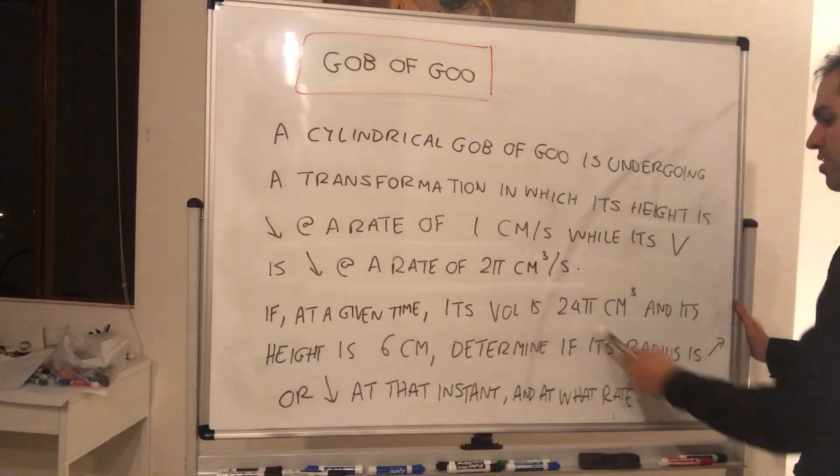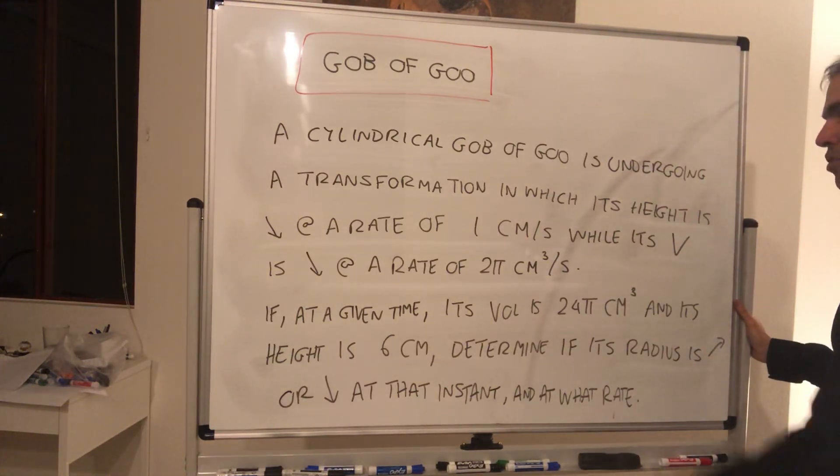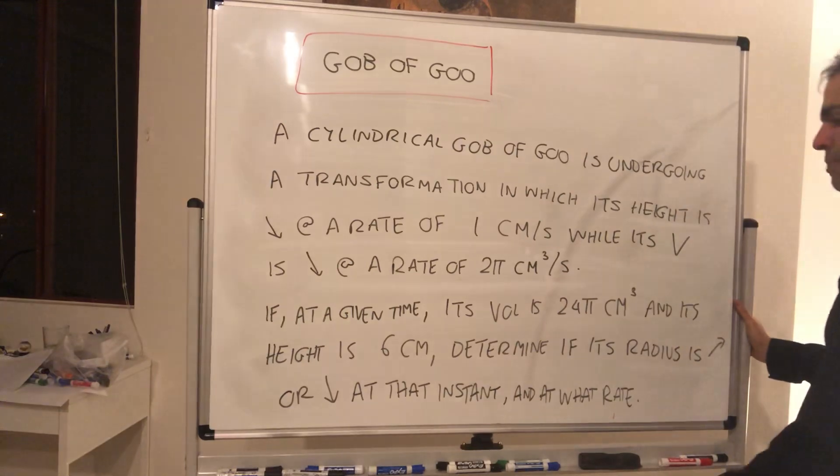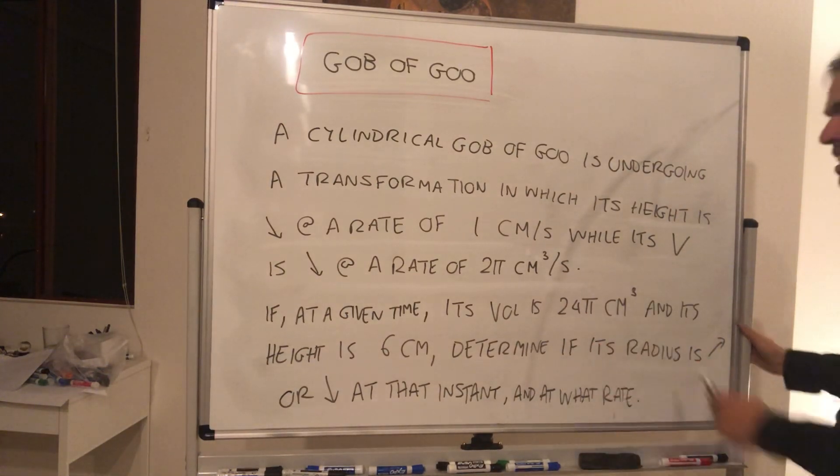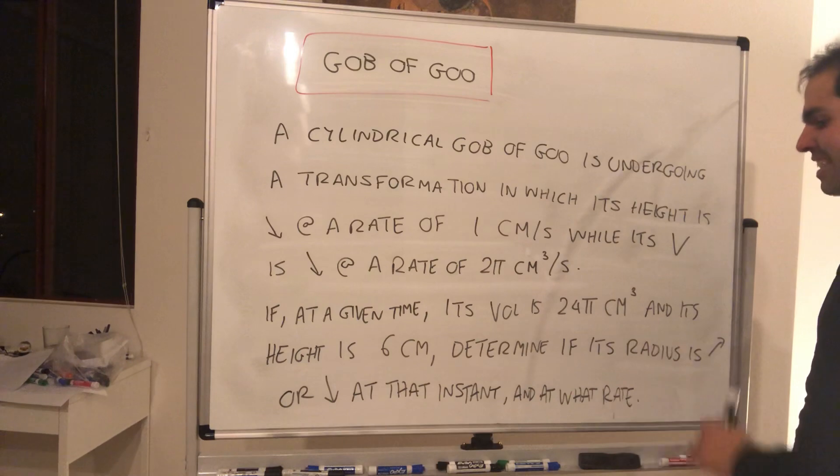If at a given time the volume is 24π cm³ and its height is 6 cm, determine if its radius is increasing or decreasing at that instance and at what rate.